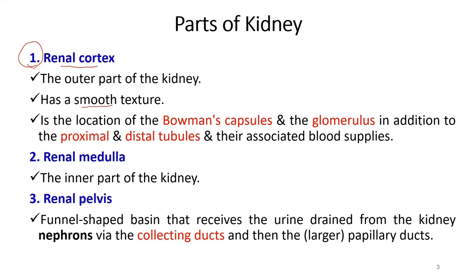In the renal cortex, structures include Bowman's capsules, the glomerulus, and proximal and distal tubules. The inner part is the renal medulla. Both regions are supplied with blood by a renal artery and drained by a renal vein. Within the cortex and medulla lie tightly packed excretory tubules and associated blood vessels. These carry and process filtrate from blood entering the kidney. Nearly all fluid in the filtrate is reabsorbed into surrounding blood vessels and exits via the renal vein. The remaining fluid leaves as urine, collected in the inner renal pelvis, and exits via the ureter.